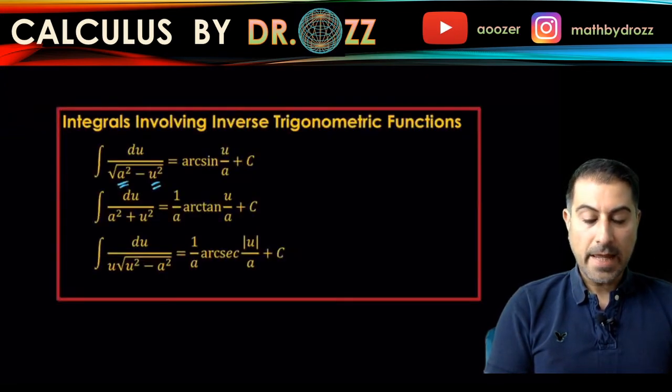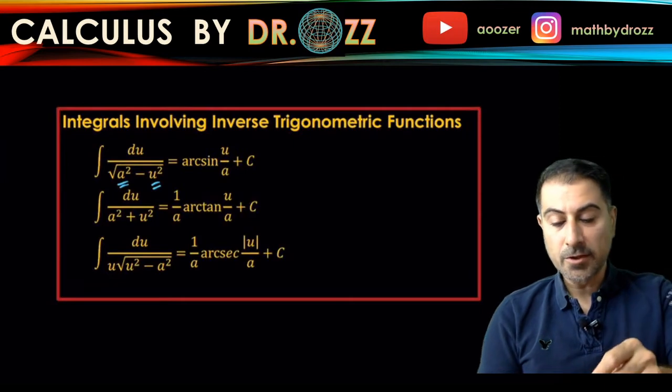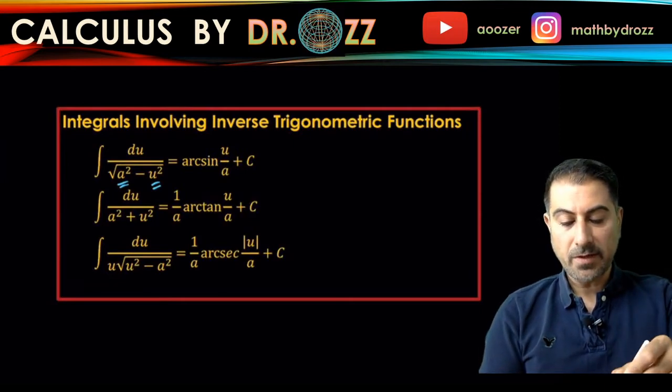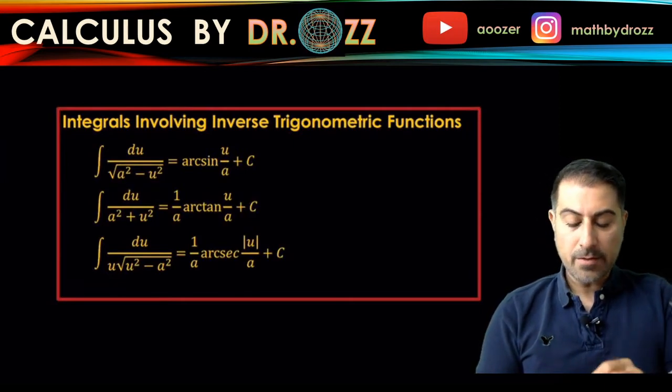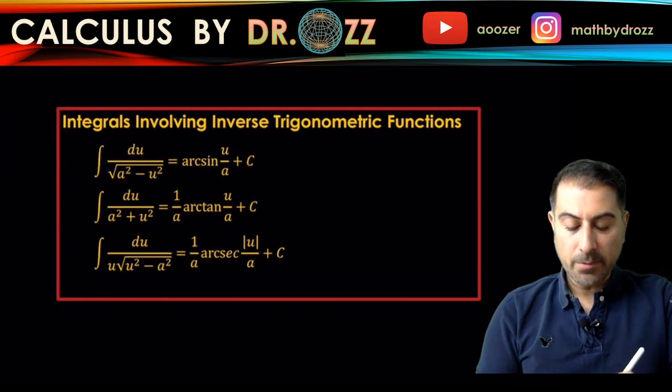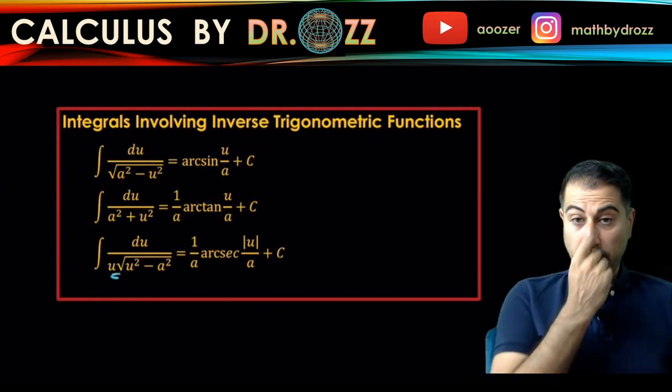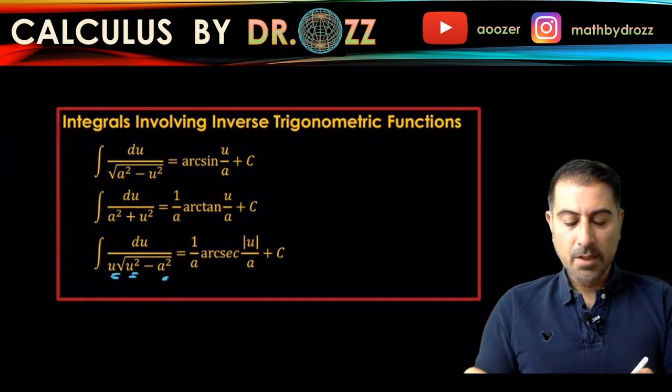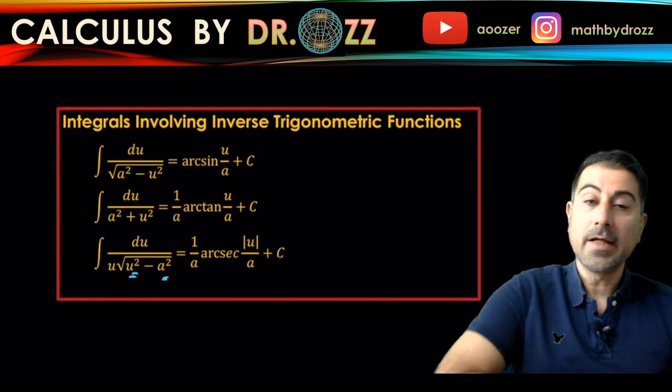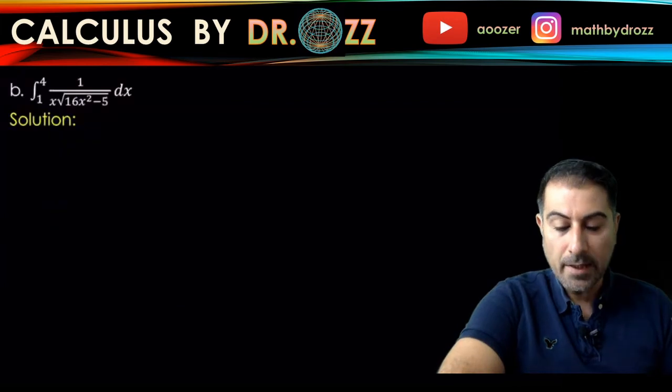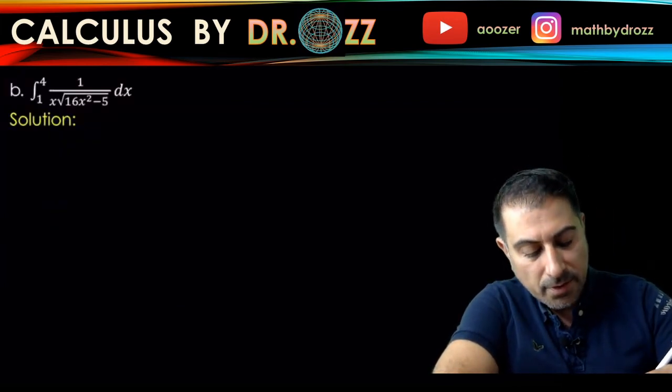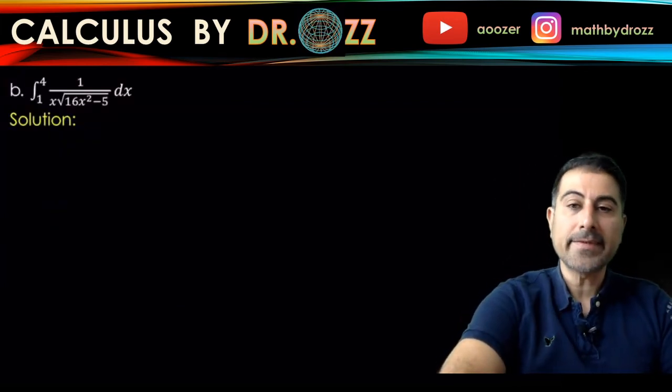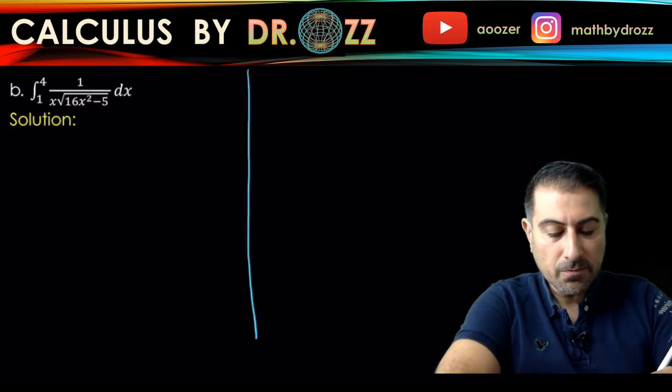This looks like the very last integral that you have: a variable squared and a number squared. So we should catch this pattern because the given integral looks like it's arc secant type integral. So what I'm going to do first is to tackle the indefinite integral version of this.